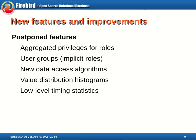Firebird 3 will not have value distribution histograms to help the optimizer choose better plans in the case of skewed value distribution. And the ability to check timing for different operations inside the engine — available as a patch but not well tested on all platforms — will be deferred to the next Firebird version. I apologize that some of our promises will not be delivered for Firebird 3, but this release is really late already and we do not want to delay it even more.